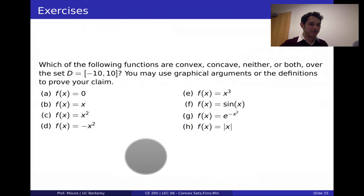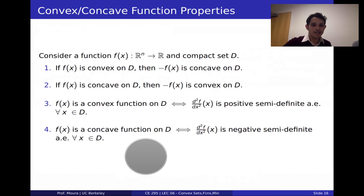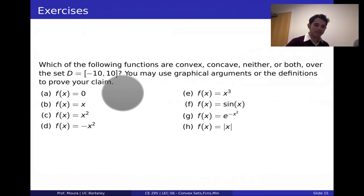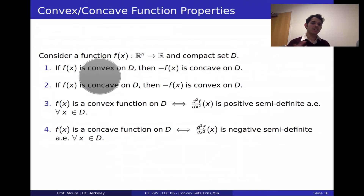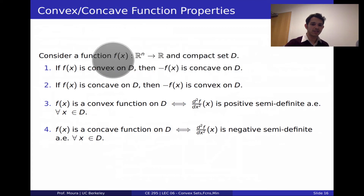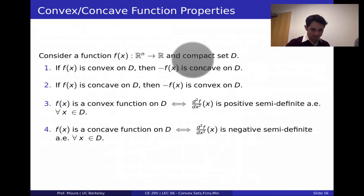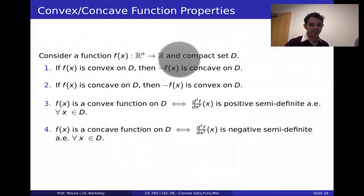A few useful properties for convex and concave functions. Note that in those exercises, x was a scalar. Now consider a function f where x could be a vector (n×1) defined over a convex set D. If f(x) is convex on D, then -f(x) is concave on D. This means maximizing a concave function is the same as minimizing a convex function — just define a new function as -f(x), which will be convex.